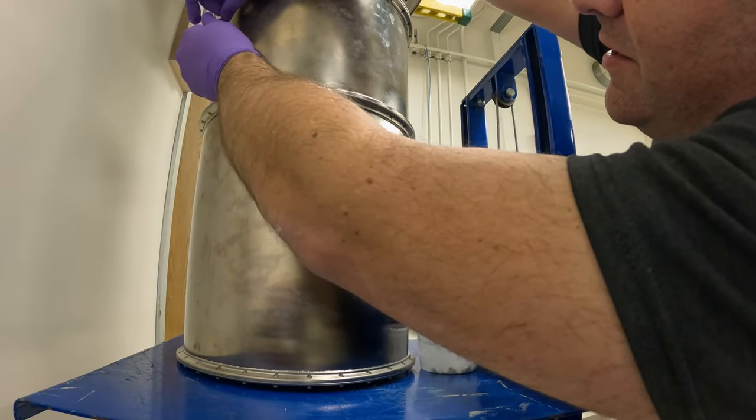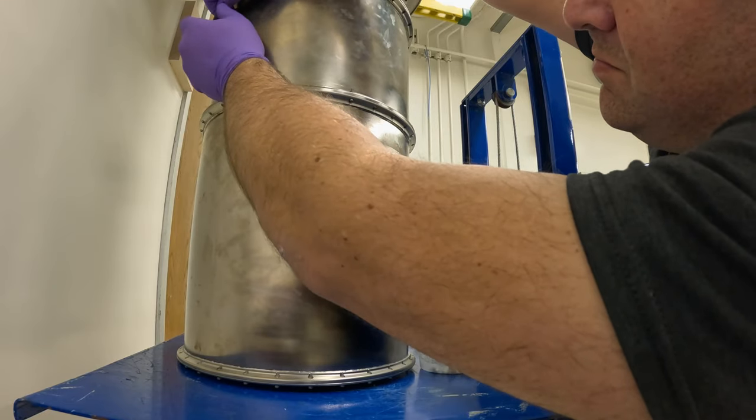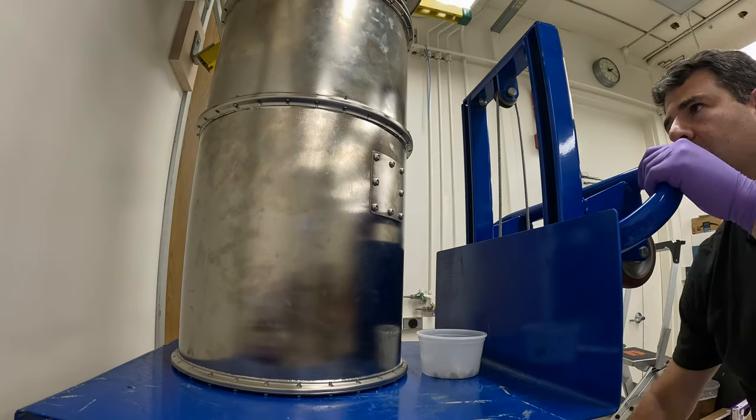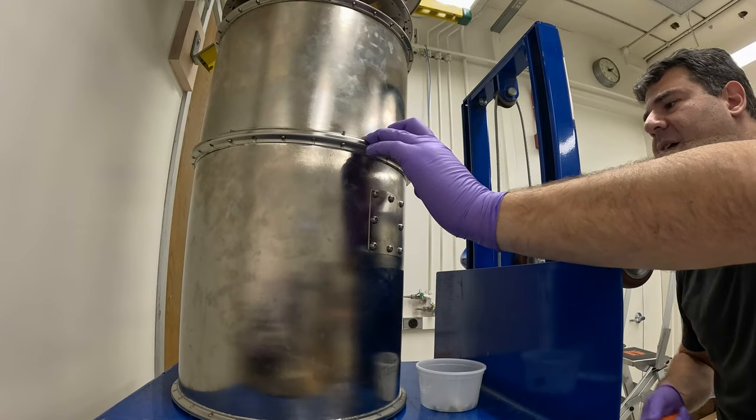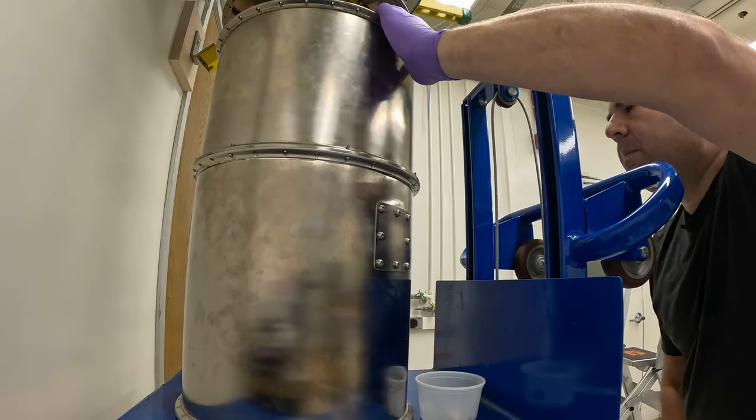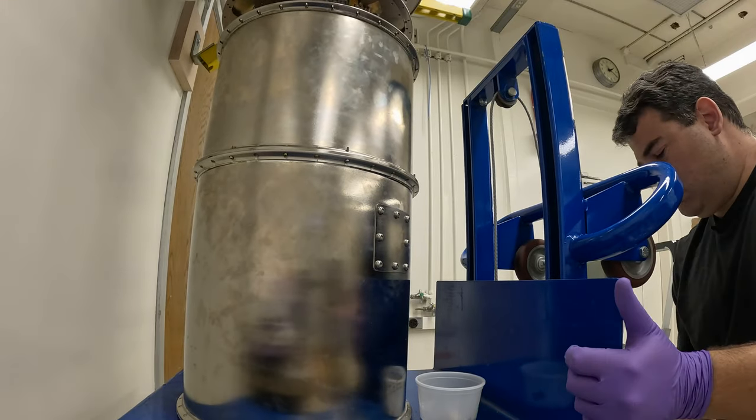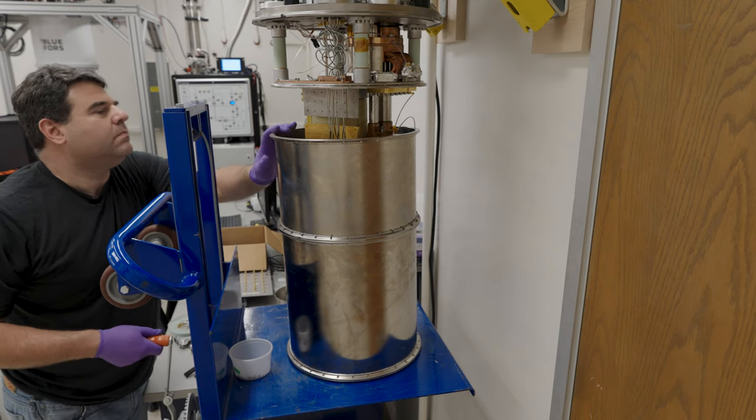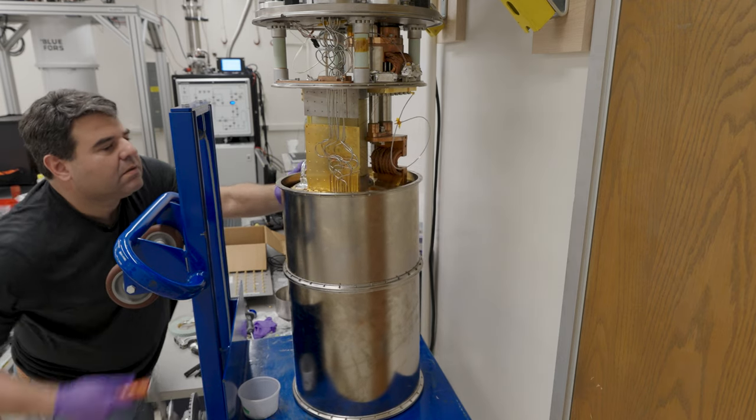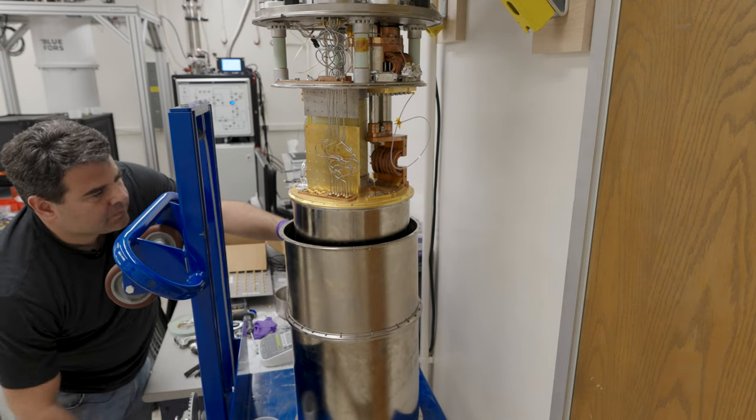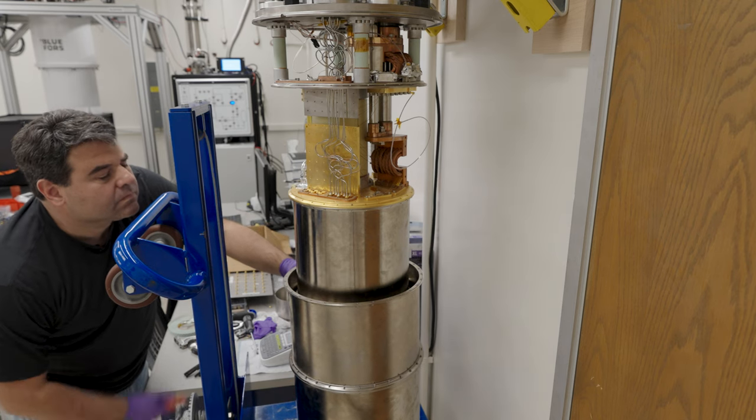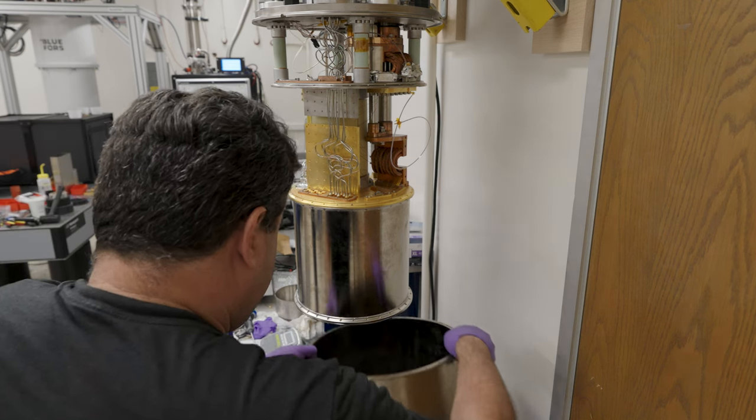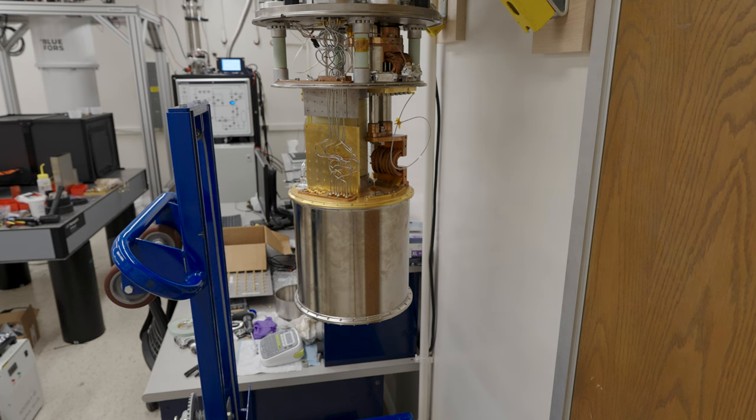All right. Last screw. All right. Let's see what happens now. Removing the 50 Kelvin can. Not very smooth there, but we got it off.